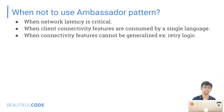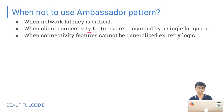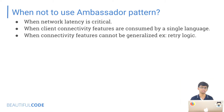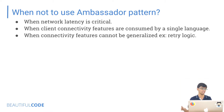When not to use this pattern: when network latency is critical, since it adds a small lag and in latency-critical scenarios every millisecond matters. When client connectivity features are consumed by a single language — if all your applications are in Ruby, it might make more sense to write a Ruby library and deploy it with the application rather than a separate container. When connectivity features cannot be generalized — for example, retry logic. If you generalize retry logic in an ambassador container but your external service doesn't support idempotent retries, the state of the service could change between calls.